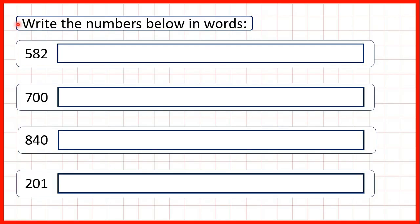We need to write the numbers below in words. Here we can see that all of our numbers are three-digit numbers. If we remember that in a three-digit number, the first digit tells us how many hundreds we have, then we have our tens digit, and then on the end we have our ones digit. That will help us to write these numbers.